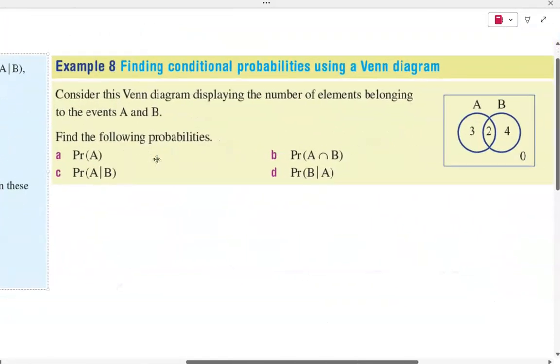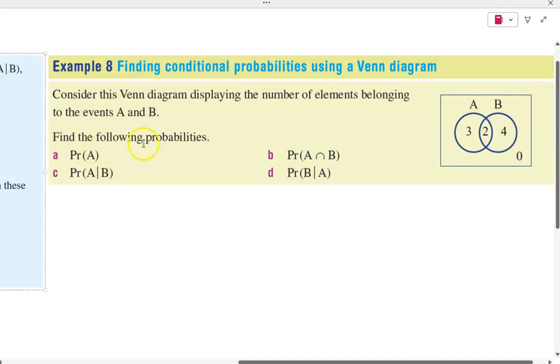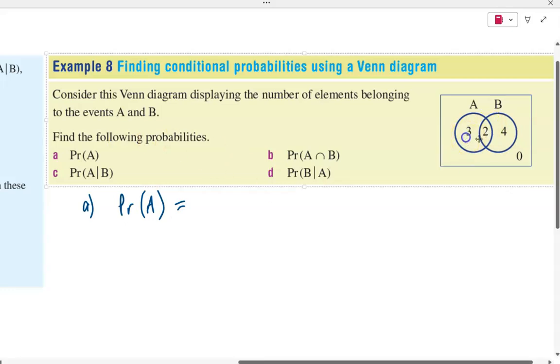Here's a Venn diagram with events A and event B. It says, find the probability that event A will occur. So for A, what's the probability that event A will occur? It is in total five over three plus two plus four, nine.